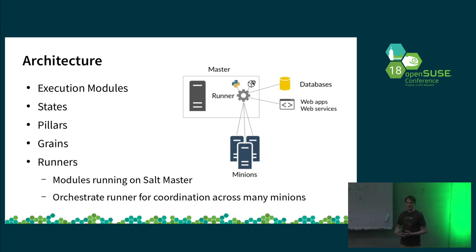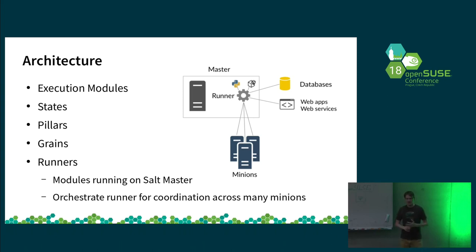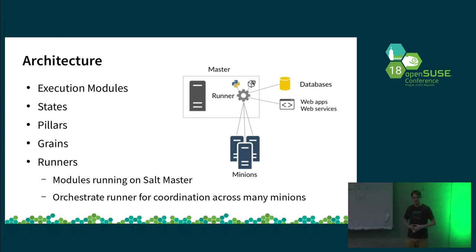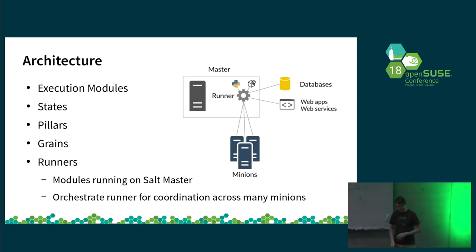One interesting runner is the orchestrate runner. It's meant to synchronize multiple machines together. For example, when you are booting a machine it is registered in DHCP, and when it is ready you might want to change a hostname. So you have a Salt state to change the hostname on a minion, and then another state which changes the hostname on the DNS server in the named configuration. You can use orchestrate to synchronize multiple states on multiple minions at the same time, also preventing race conditions.